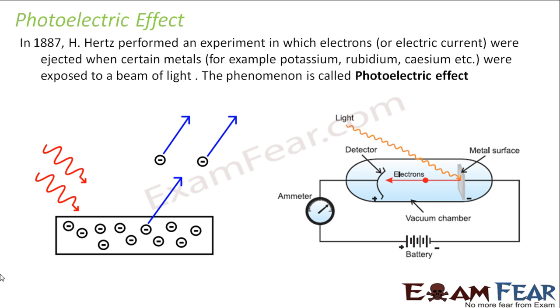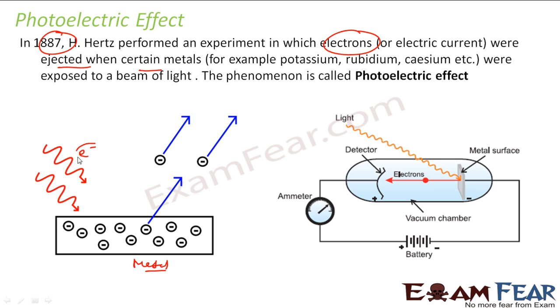The photoelectric effect, which exactly shows that the electromagnetic waves have particle nature, will be explained here. In 1887, Hertz performed an experiment in which electrons were ejected on certain metals. He ejected electrons from a metal using a beam of light.